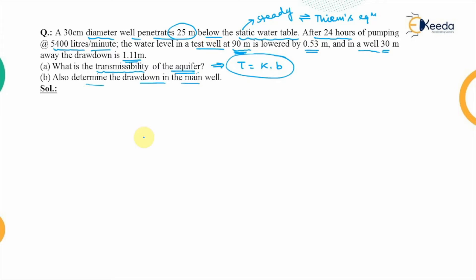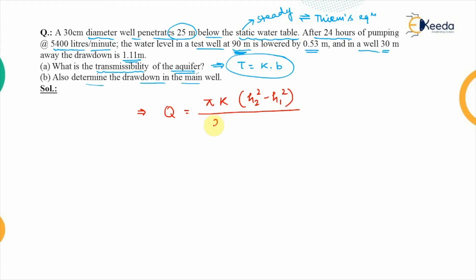Since the well penetrates 25 meters below the static water table, it is evident this is the case of an unconfined aquifer. Thiem's equation for discharge will be applied, which is: Q = πk(h₂² − h₁²) / [2.303 × log₁₀(r₂/r₁)].